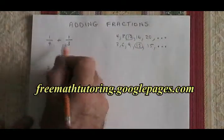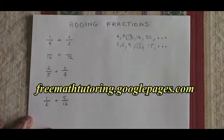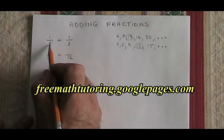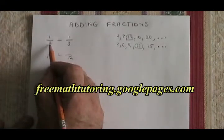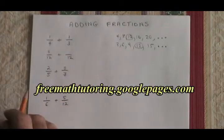So 1 quarter plus 1 third has to be converted into two fractions that have 12 as the lowest common denominator. My 4 became a 12, so I have to expand this fraction. If 4 is turned into 12 by multiplying it by 3, then 1 has to also be multiplied by 3, and I have 3 twelfths.